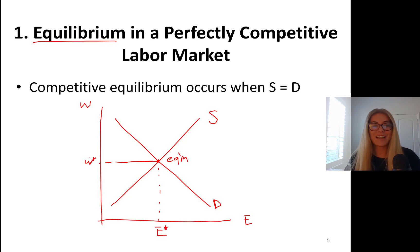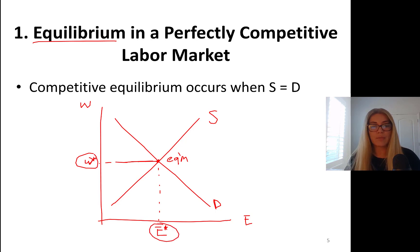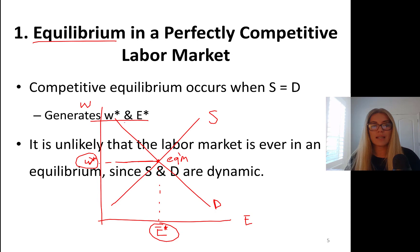This is the equilibrium wage rate — I put a star where the market-clearing wage is. So you see one wage rate, the labor market clears, no unemployment and no labor shortage. This generates the equilibrium wage rate and employment level.